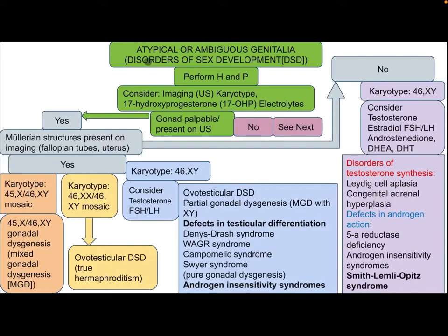How to approach a patient with atypical or ambiguous genitalia — disorder of sex development. After performing history and physical examination, consider imaging with ultrasound, karyotype, 17-hydroxyprogesterone, and electrolytes. If gonads are palpable or present on ultrasound, assess whether Müllerian structures are present on imaging such as fallopian tubes or uterus. Then proceed according to the karyotype.